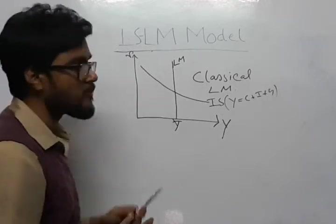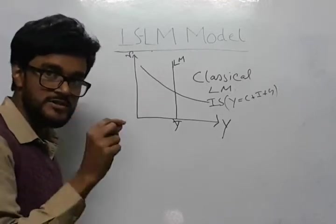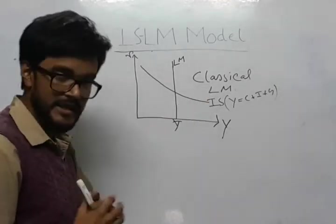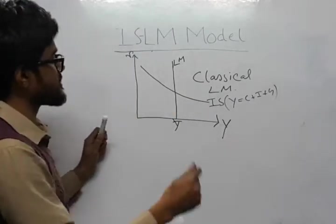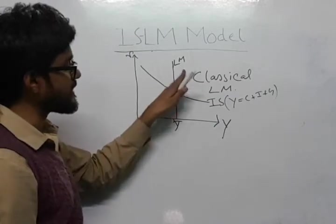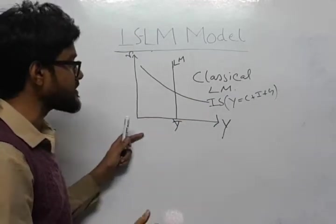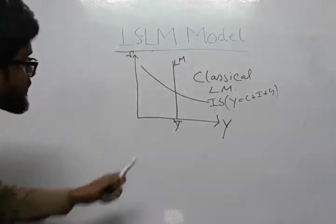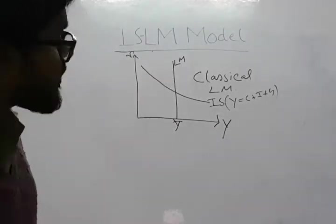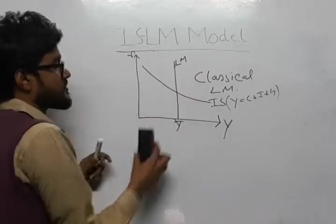Now, what is the slope of LM curve here? Today's discussion will start with classical LM curve and will proceed further to variety of slopes that we can incorporate in case of LM curve and IS curve. Now, here as you can see, the LM curve is vertically sloped, a straight line.